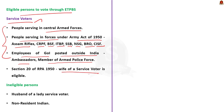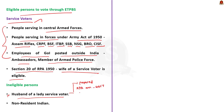The wife of a service voter who ordinarily resides with a service voter is also eligible to vote through ETPBS, as per Section 20 of the Representation of People Act 1950. However, the husband of a lady service voter is not eligible. The government proposed allowing husbands of lady service voters through the Representation of People Amendment Bill 2017, which was passed by Lok Sabha but lapsed on the dissolution of the 16th Lok Sabha in 2019. As of now, the husband of a lady service voter is not eligible to vote through E-ballot.